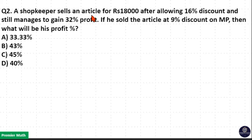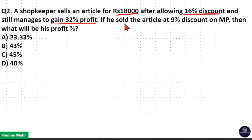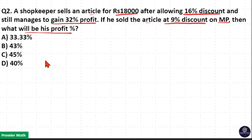A shopkeeper sells an article for Rs.18,000 after allowing 16% discount and still managed to gain 32% profit. If he sold the article at 9% discount on mark price, then what will be his profit percentage?